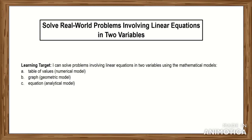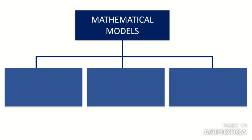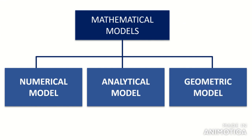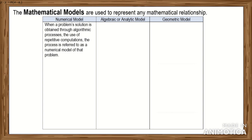Real life quantities are determined by linear equations in two variables using mathematical models. In this video, we'll find out what mathematical model is appropriate for solving a particular problem. There are three mathematical models: the numerical model, the analytical model, and the geometric model. When a problem solution is obtained through algorithmic processes and repetitive computations, the process is referred to as a numerical model.